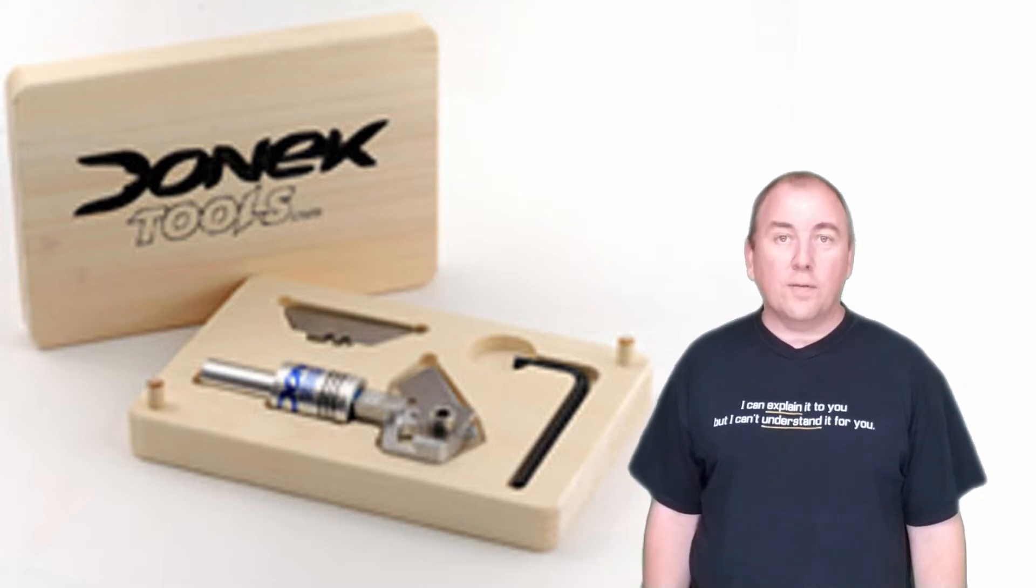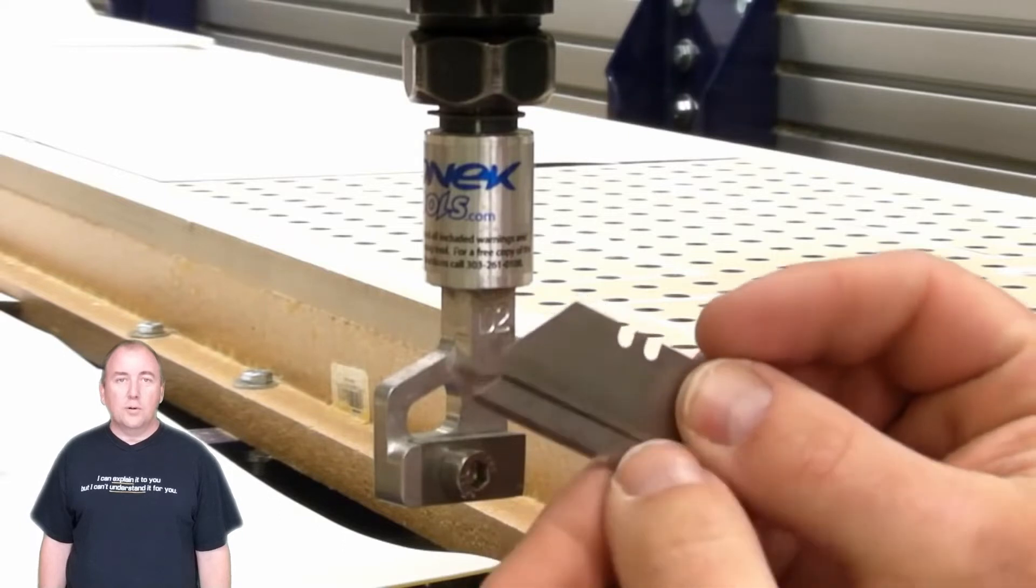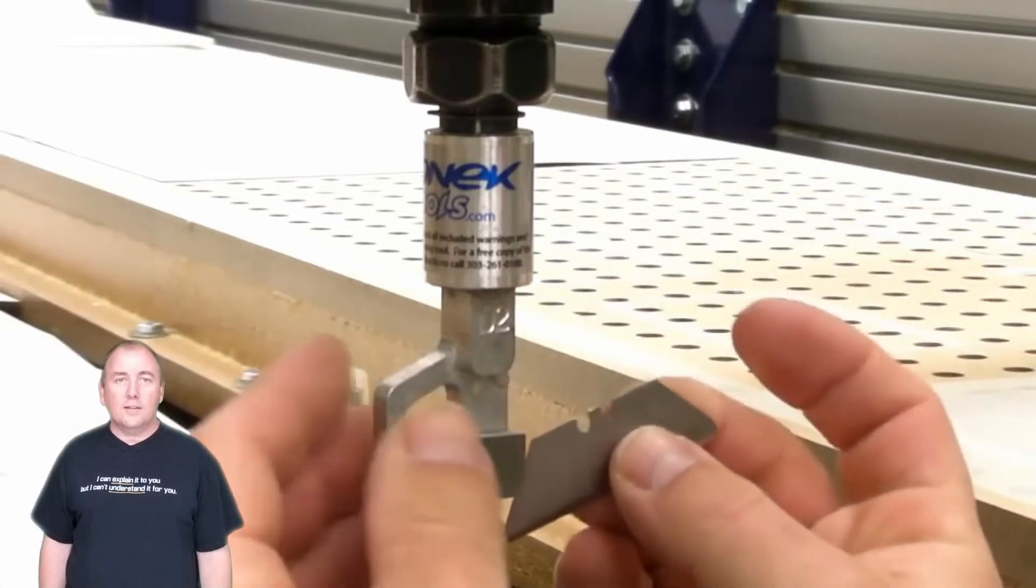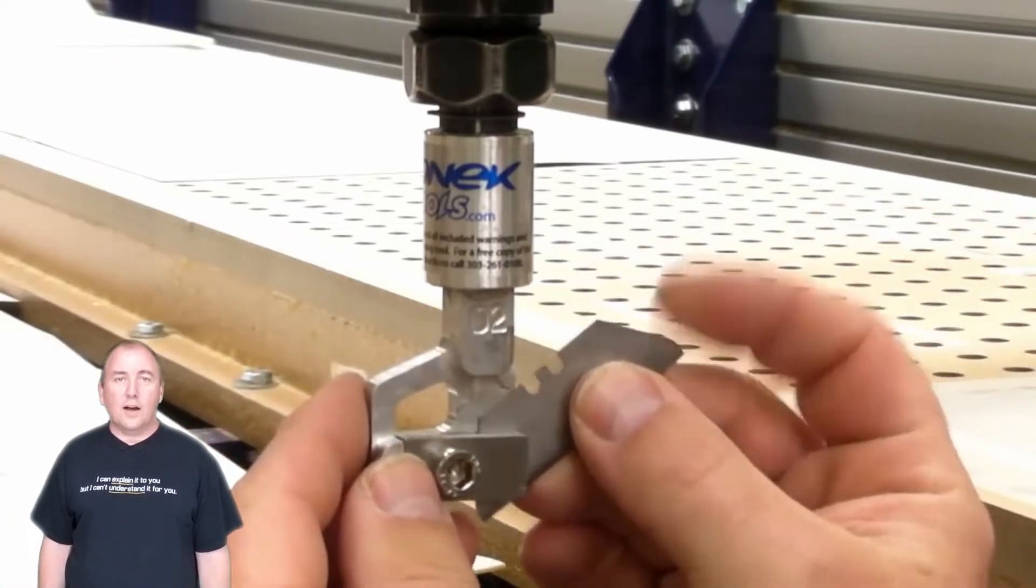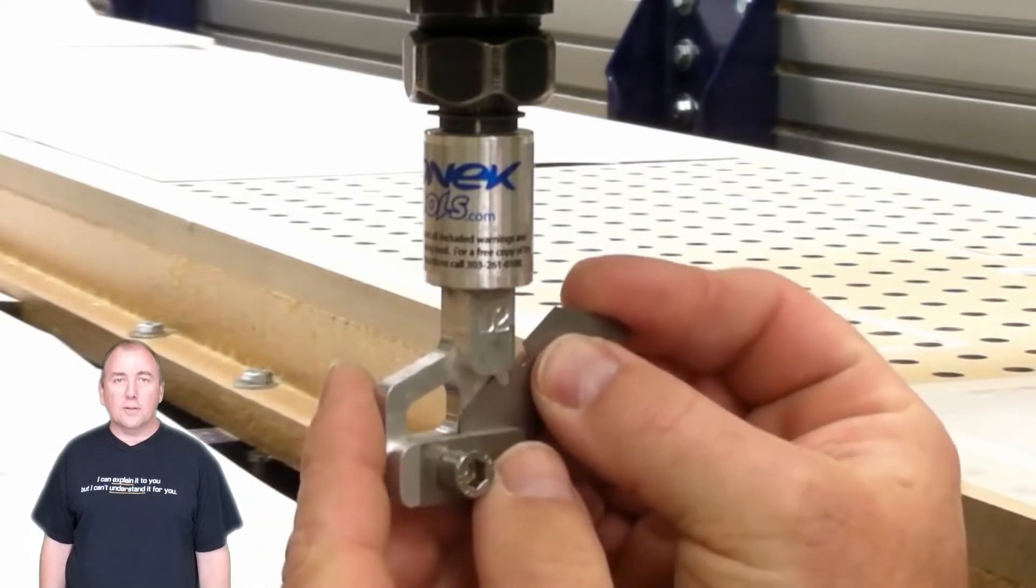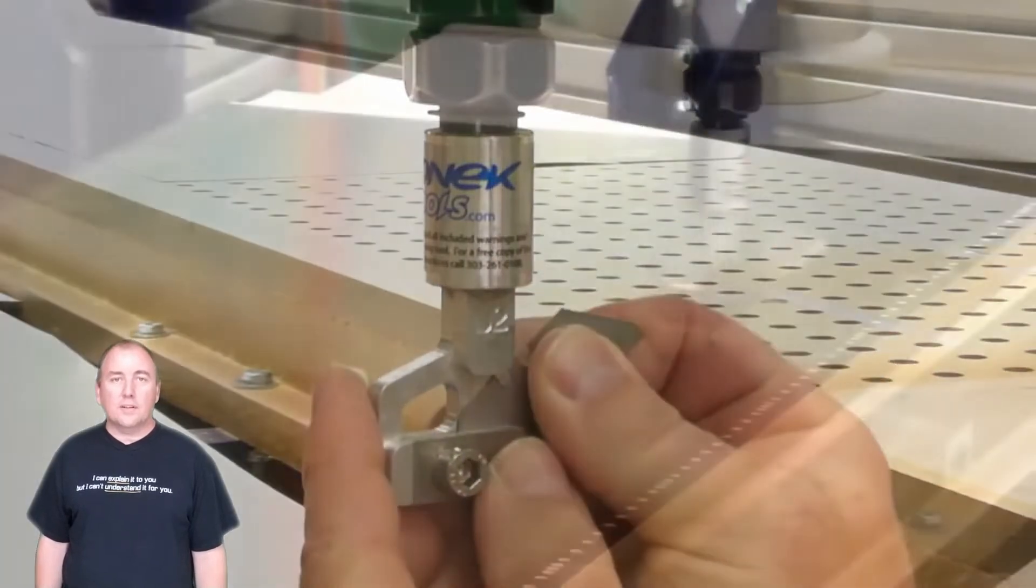The drag knife gets its name from the fact that the blade is offset slightly from center so that as the CNC moves the blade is dragged behind the tool shaft causing the blade to align in the same direction that the CNC is moving, just as if you were making the cut with an exacto knife with your hand.